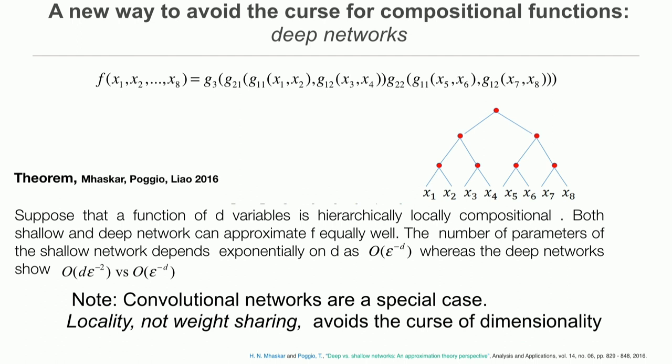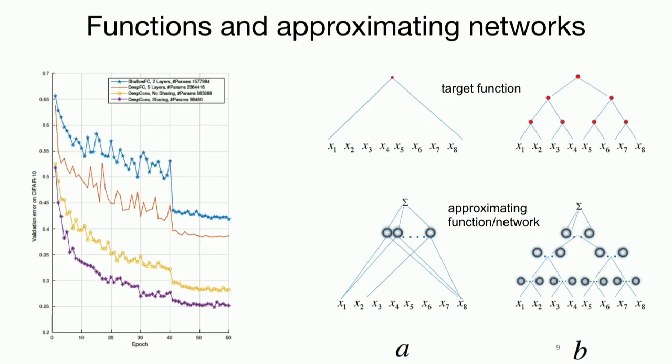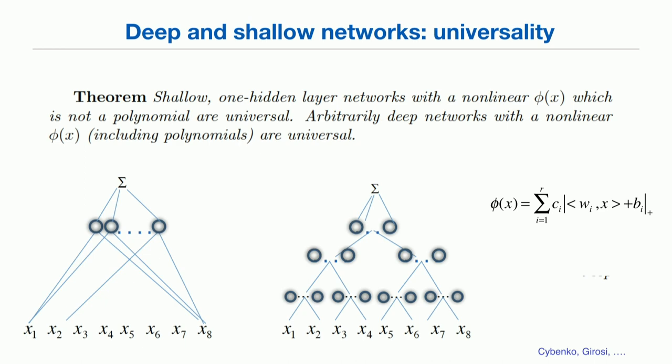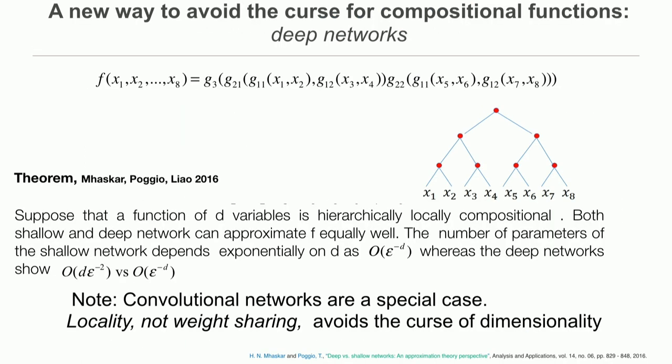So, there is one class of functions for which deep networks, but not shallow networks, can escape the curse of dimensionality. And these are functions that have a structure like the one shown there, are compositional functions, are functions of functions of functions, where the constituent functions have a low dimensionality. In this case, 2. So, the graph you see there is a graph of the function, is a binary tree.